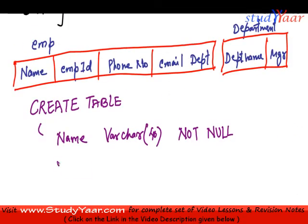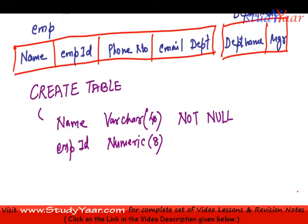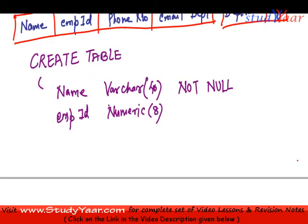Next I have employee ID. I would say it is NUMERIC with 8 characters. Next I have phone number, and phone number I would also say is NUMERIC with 10 characters.